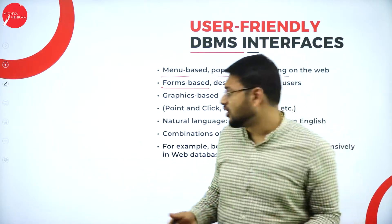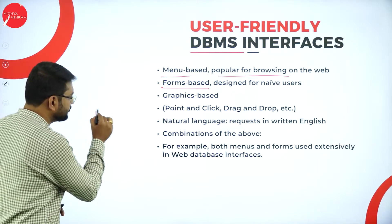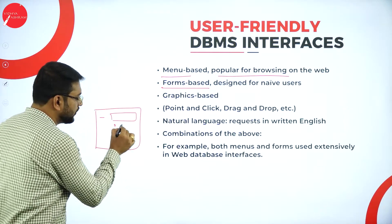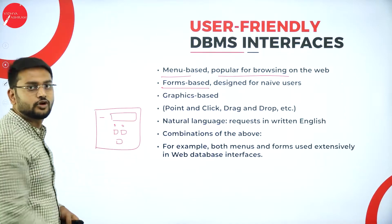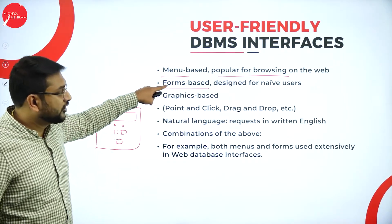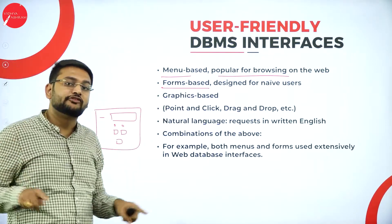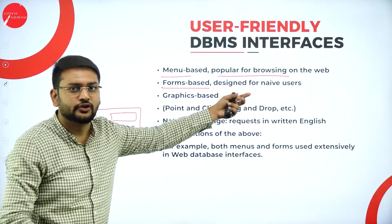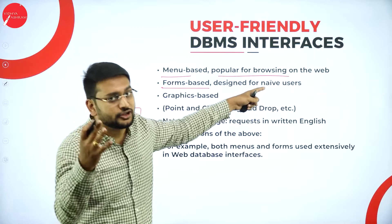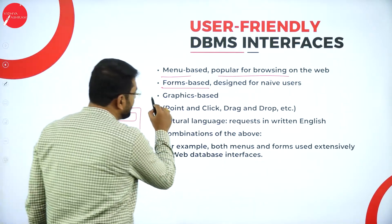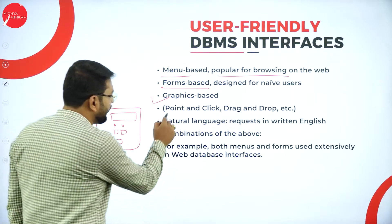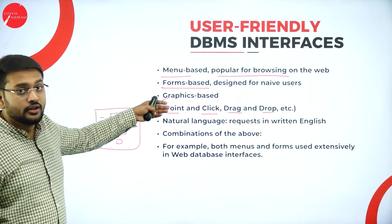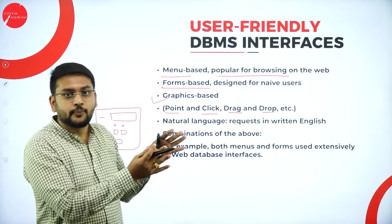A form-based design includes elements like a username label, a text box, radio buttons, checkboxes, and buttons — that is what we call a form. This interface is also used for naive users, also known as parametric users. Graphic-based interfaces involve point, click, drag, and drop — essentially a GUI.